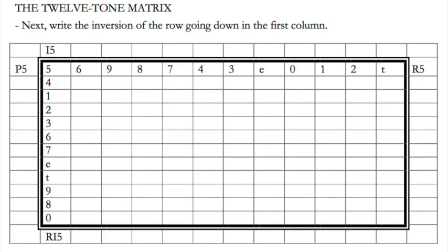The next step is to write the inversion of the row going down in the first column, making sure all intervals move in the opposite direction. I started going up 1, then up 3, then down 1 in the prime — so my inversion will start going down 1, then down 3, then up 1. I'll label this going top to bottom as I5, the inversion of P5. I5 is: 5, 4, 1, 2, 3, 6, 7, 11, 10, 9, 8, 0.